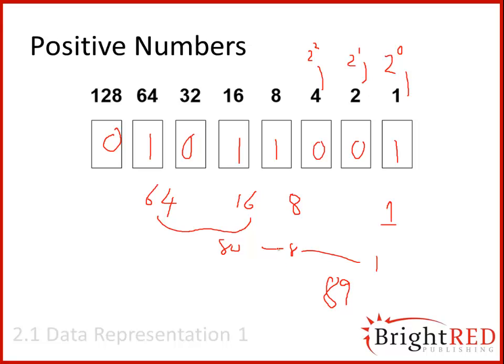So the binary representation of 89 decimal is 01011001.